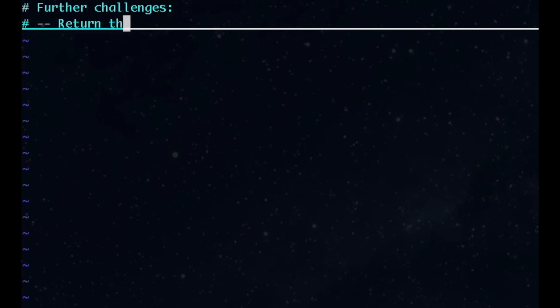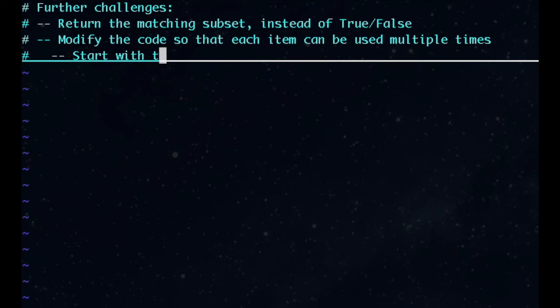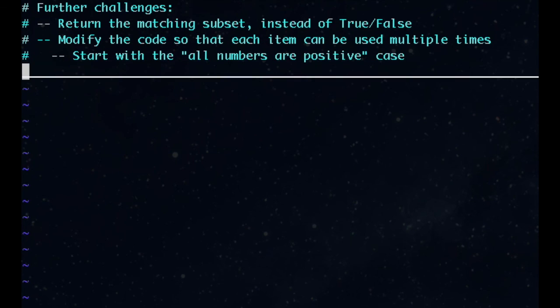Right now, we're returning whether or not it's possible to reach our target. You could change the program to return the subset that reaches the target instead. Also, how would you change your code if you could use each item multiple times? If you try this, you should start by assuming that all of the elements are positive.